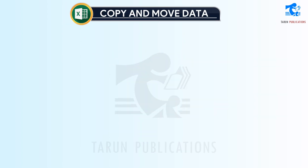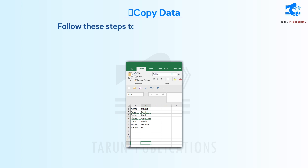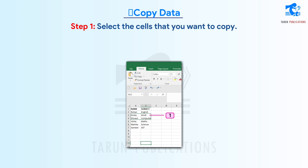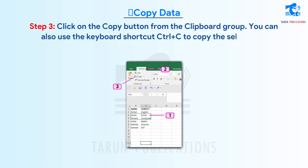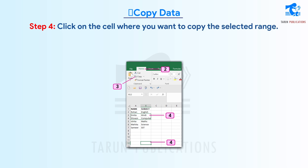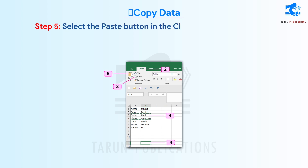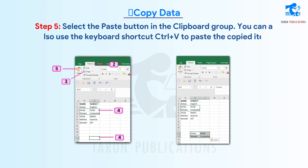Copy and move data. We can copy and move the contents of a cell, a range of cells, or the entire worksheet. To copy data, follow these steps. Step 1: Select the cells that you want to copy. Step 2: Click on the Home tab. Step 3: Click on the Copy button from the Clipboard group. You can also use the keyboard shortcut Ctrl+C. Step 4: Click on the cell where you want to copy the selected range. Step 5: Select the Paste button in the Clipboard group. You can also use the keyboard shortcut Ctrl+V.